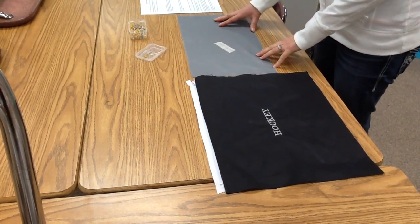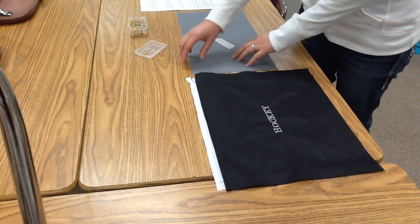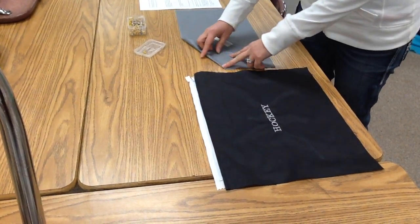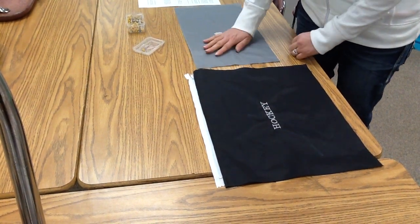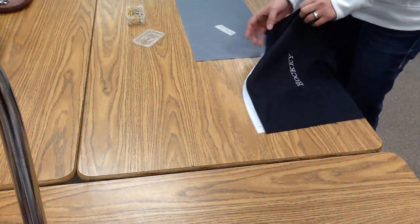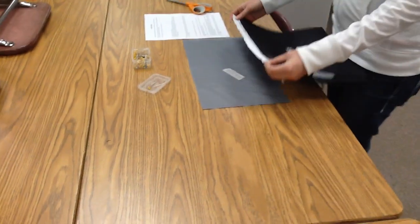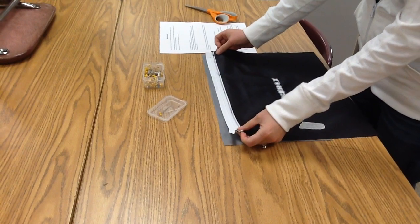So it says to lay the top front piece on the table with the right side up, or the side you want on the outside of your bag. So if you have a side that you want to be on the inside of your bag, that should be facing the table. Then it says you're going to place the zipper upside down with the zipper tape even with the top edge of your fabric, and the zipper pull will be on the left this time.